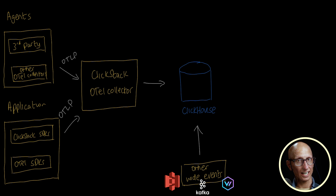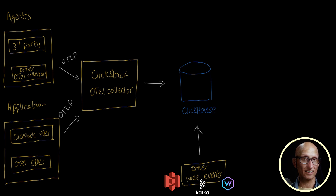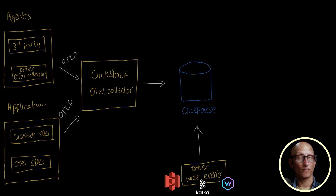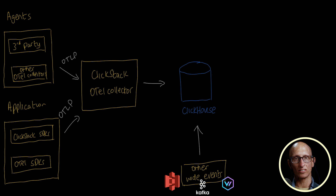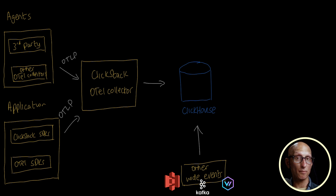So why ClickHouse? Observability data needs support for super-fast aggregations over high cardinality data with cost efficiency at scale. ClickHouse is a natural fit because it excels at high cardinality data, compresses data efficiently, uses familiar SQL, and delivers those super-fast aggregations. Its recent support for JSON means it's also now able to handle the semi-structured data often seen in observability.